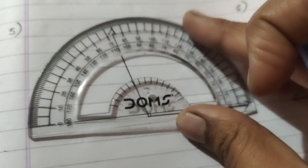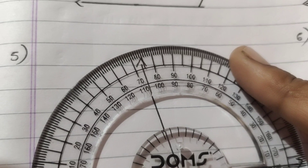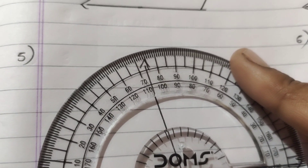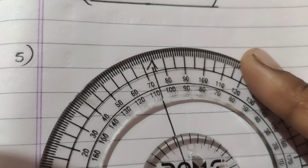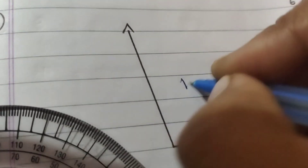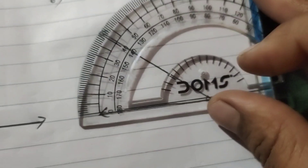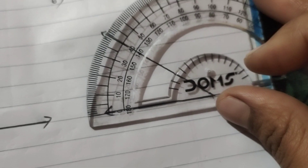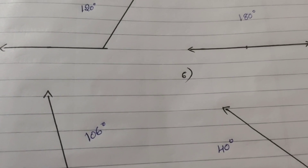Next, the fourth angle measures 180 degrees. The fifth one is an obtuse angle — this is about 106 degrees. The sixth angle is 40 degrees. So those are the six angles drawn and measured.